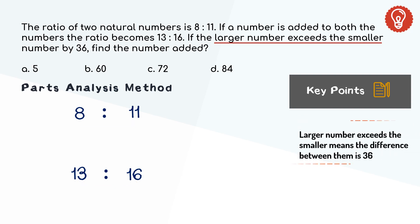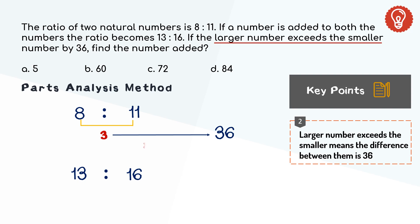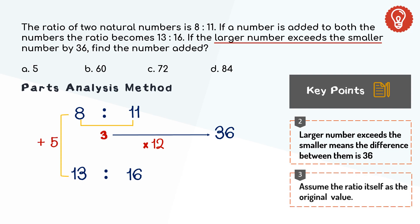Solving the second condition: the larger number exceeds the smaller number by 3 according to our assumption, but the difference between them should be 36. So we need to increase our assumption by 12 to match the value given in the question. We are asked to find the number added to both sides of the ratio. If 8 is the actual number, we need to add 5 to get 13. Similarly, if 5 is added to 11 we get 16, which means 5 should be added to both sides according to our assumption. But 5 is not the original answer. We need to increase our assumption by the same number 12, which gives us 60. Hence the number added is 60.